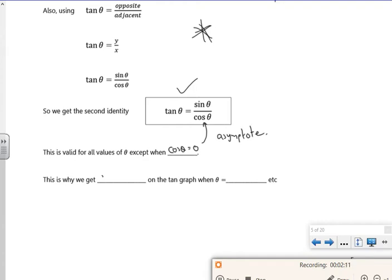So this is why we get asymptotes. It's a divide by zero, and that's when it's like 90 degrees or 270 degrees, or kind of like plus or minus various amounts of 180.